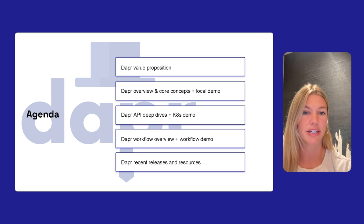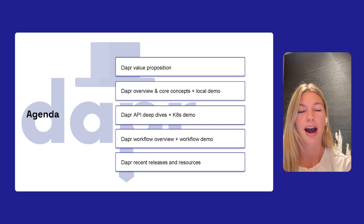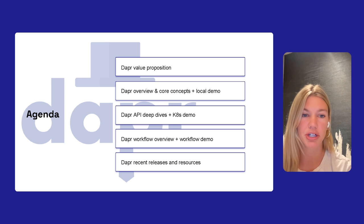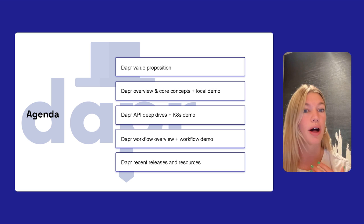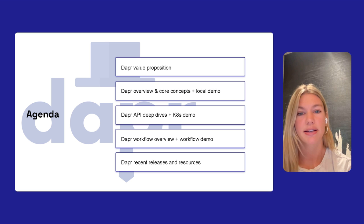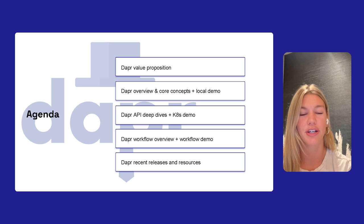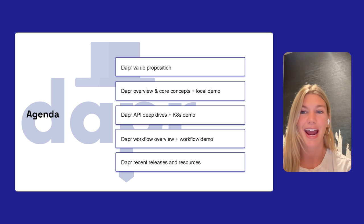If we take a quick look at the agenda, we'll cover the Dapr value proposition — why should you care about Dapr and how does it help developers? We'll do a Dapr overview covering core concepts, architecture, and how you use it, then get up and running with Dapr on a local machine. After that, we'll dive into the Dapr APIs in action in Kubernetes, explore the newer workflows API introduced in Dapr 1.10, do a demo on a local machine, and cover recent releases and resources.